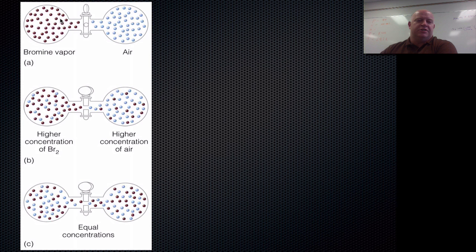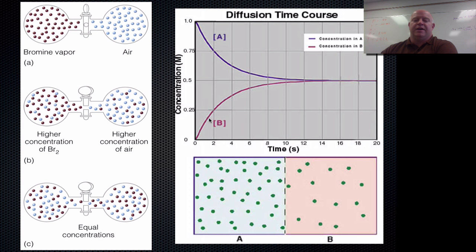So here's a couple of visuals for you guys. You have bromine vapor here, air vapor here, closed off scenario. If you open that up, the higher concentration of air will go over here, the higher concentration of bromine will go over there, and eventually, through time, they'll be equal between the two things. Same idea here, if you take a look at chamber A versus chamber B.